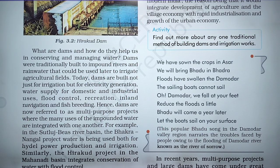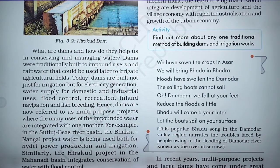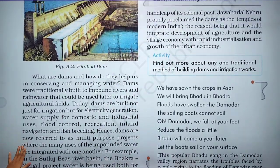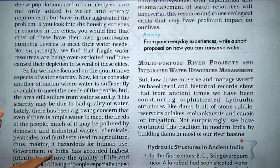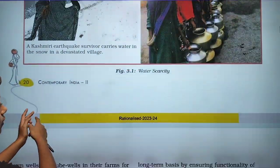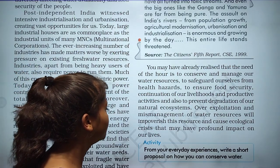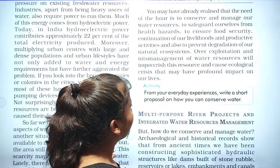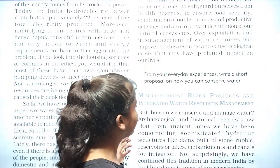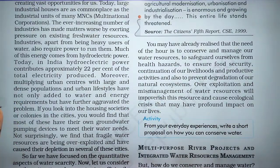Dams were traditionally built to impound river and rain water that could be used later to irrigate agriculture. In the previous section we read that we have to conserve and manage water resources for livelihood and for our lives. By making dams we can conserve and manage water resources.